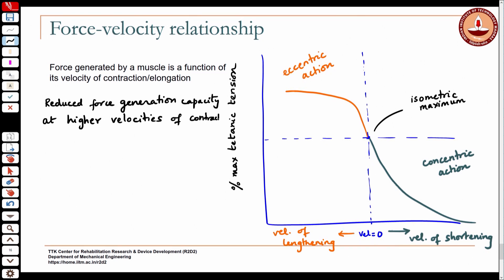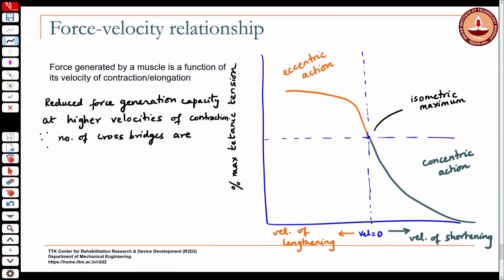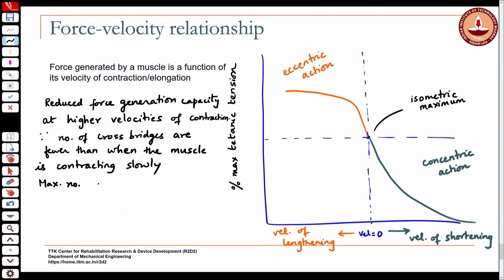The reason for reduced force at higher velocities is that the number of cross bridges are fewer than when the muscle is contracting slowly. The maximum number of cross bridges exist in the isometric state.